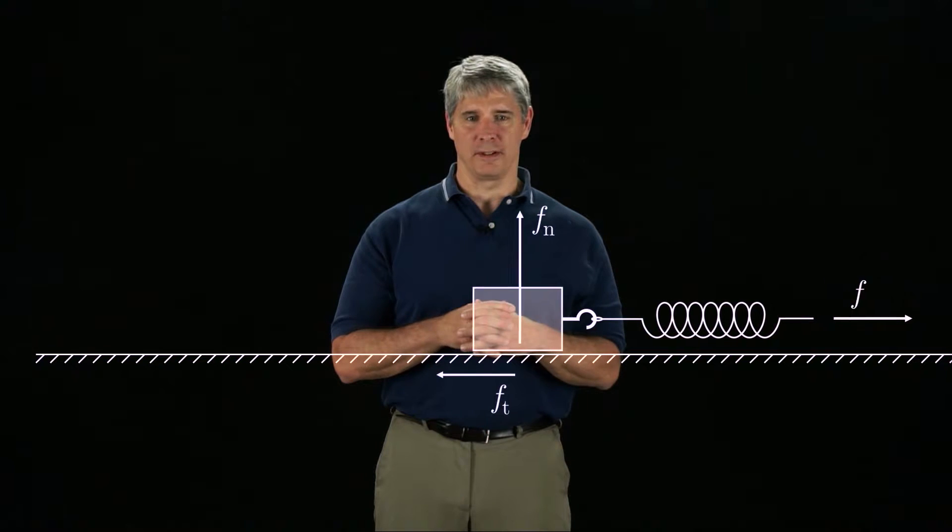If the spring is pulled with a constant velocity, the block matches the velocity and F and Ft are equal and opposite.